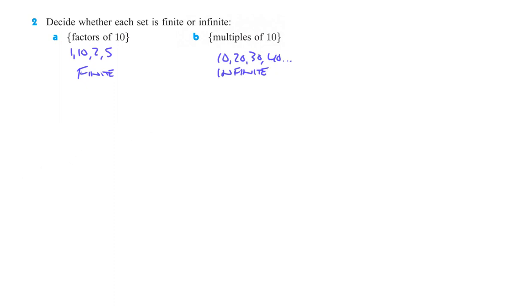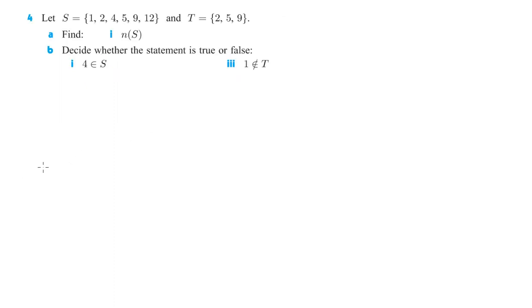All right. The next one we're going to take a look at here is 4. Let S equal this, T equals those, find n of S. So remember the n, the lowercase n, before some kind of set here, means the number of elements. So 1, 2, 3, 4, 5, 6. There's six elements.